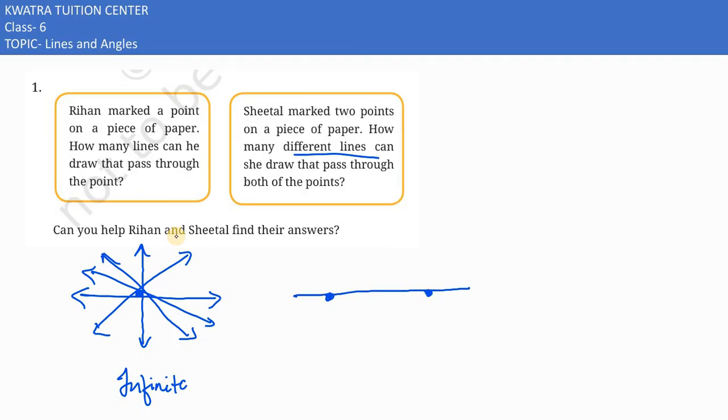So obviously only one line can pass through it, because we have already given them two points. Only one line would be passing through it. Take care, so this is the answer for the first case.